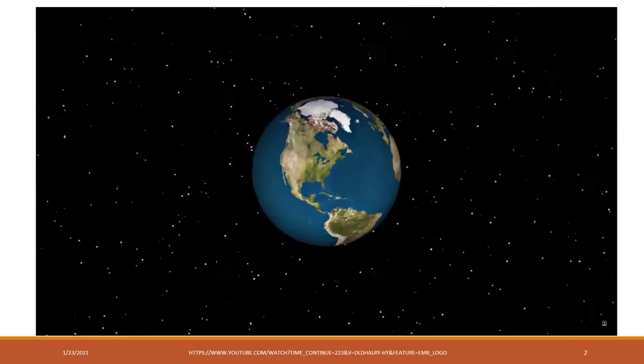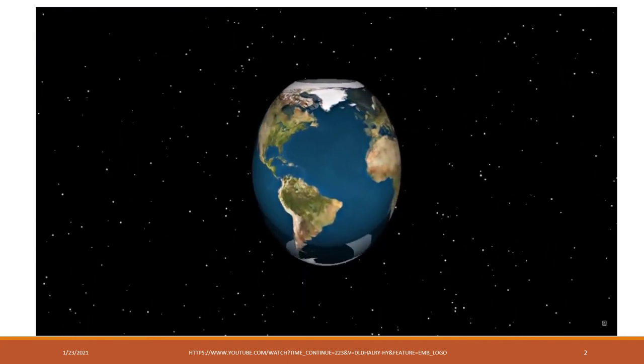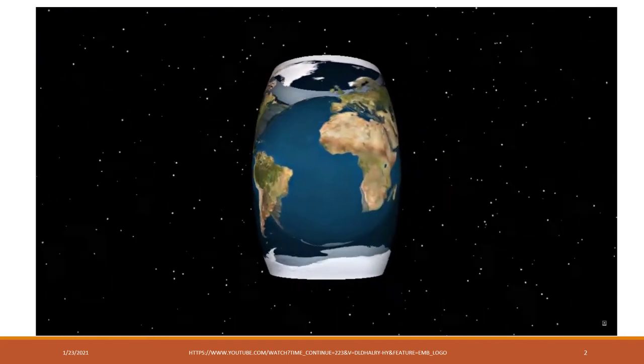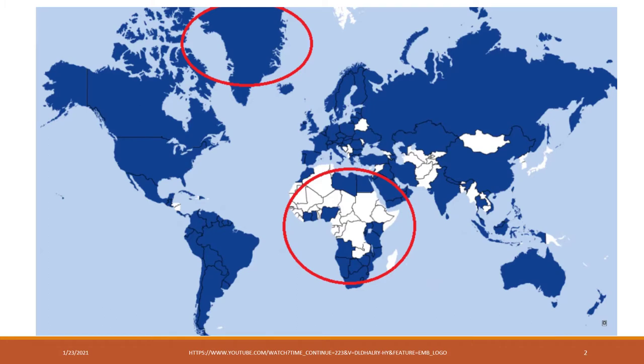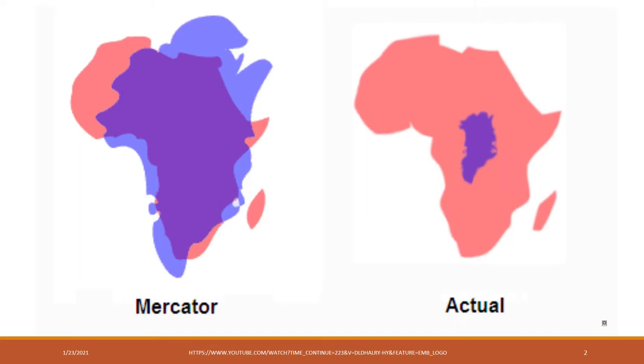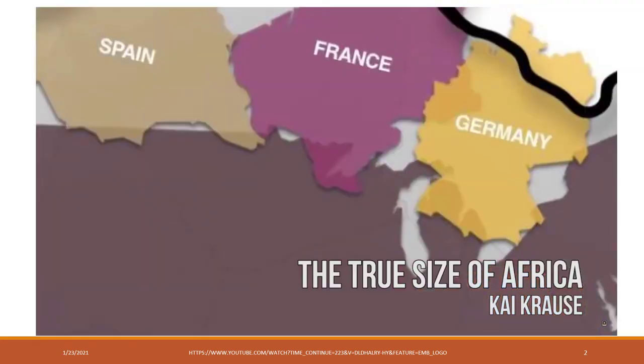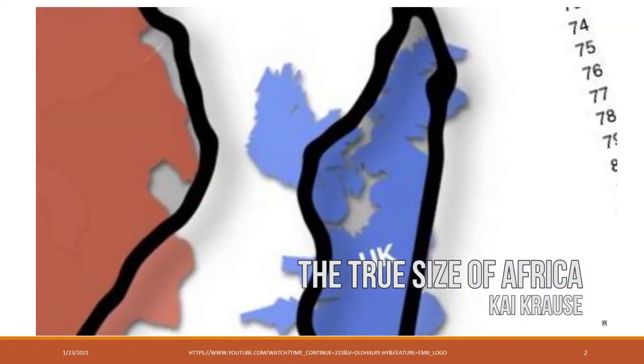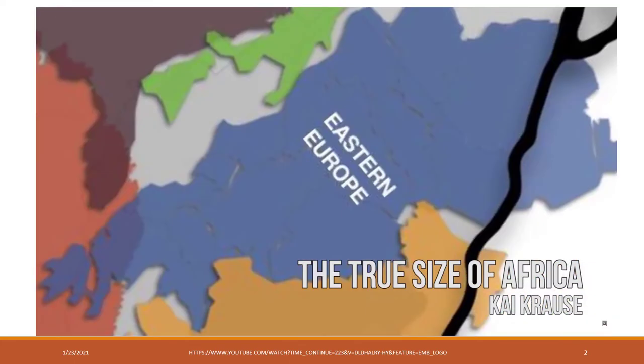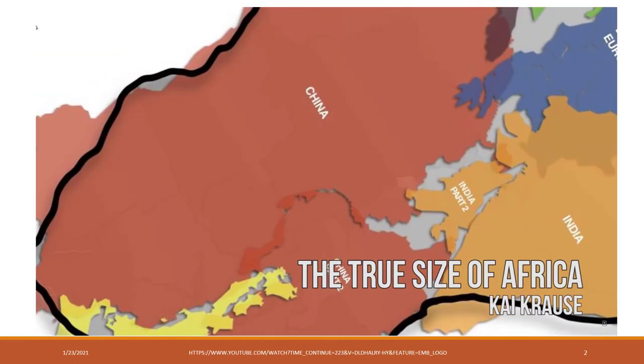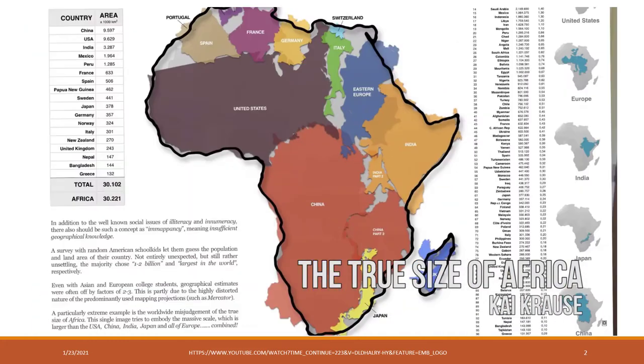As much as maps can help us understand the world, they can also distort our perceptions of the world. For example, the Mercator map projection, which we often use, stretches out the world at the poles. In this map, Africa looks like it's about the size of Greenland. But in fact, Africa is big — very big. The continent of Africa is bigger than the United States, France, Germany, Spain, the UK, all of Eastern Europe, China, and India combined.